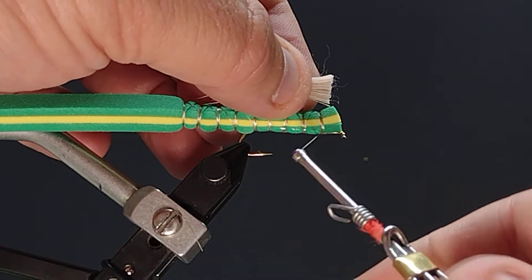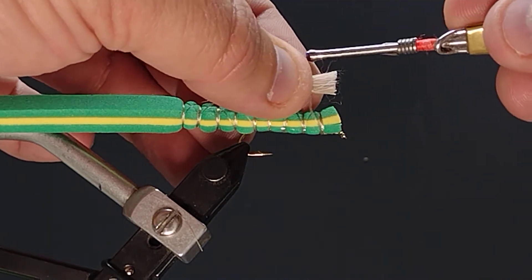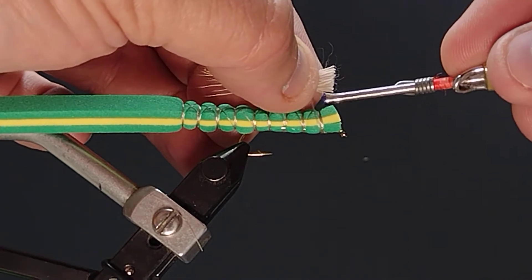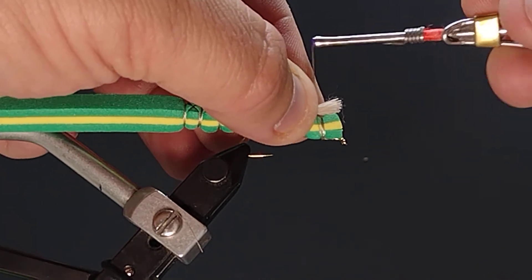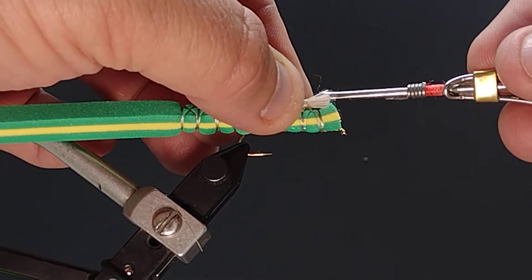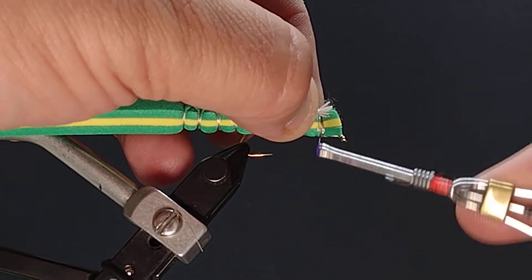When I tie this in, I'm going to do a pass or two around the deer hair only. That will allow it to control it and hold it to the top of the hook instead of running all around the hook trying to roll.